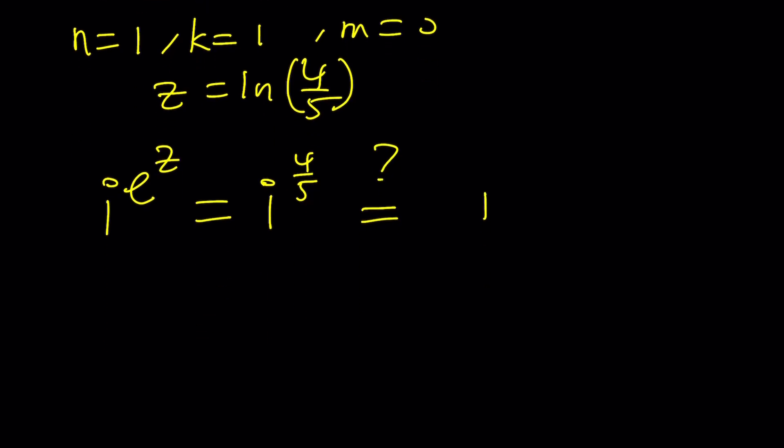Now some people argue that yes it is, some people say no because this is ambiguous. You know why? Because if you think about it as i to the 4th to the power 1 fifth, i to the 4 is 1, right?